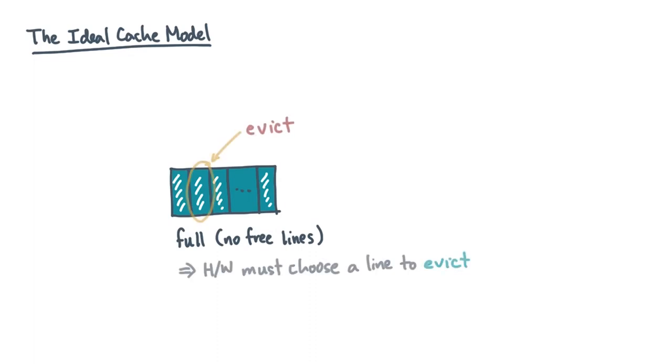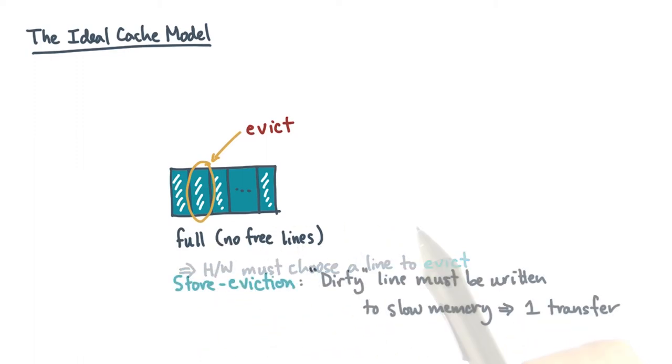Now, at some point, the cache will be full of previously used values. To make room for new values, the hardware will need to choose some line to kick out or to evict. If the value being evicted hasn't been written to main memory yet, because, say, it was a store hit previously, then that will cause another memory transfer. I'll refer to those transfers as store evictions. So if we have to kick something out, what do we kick out?